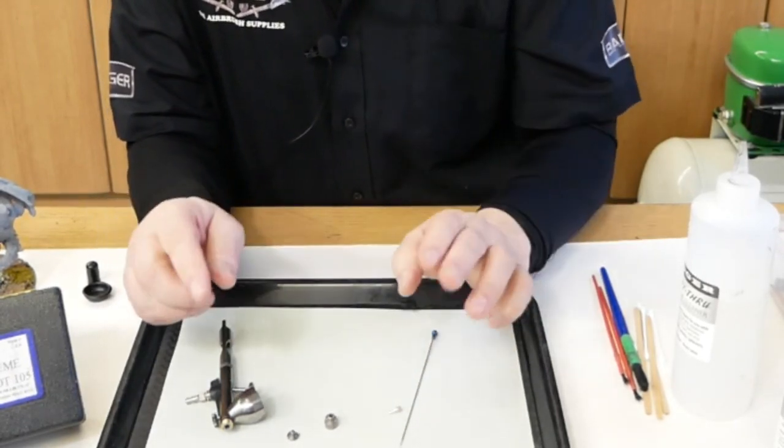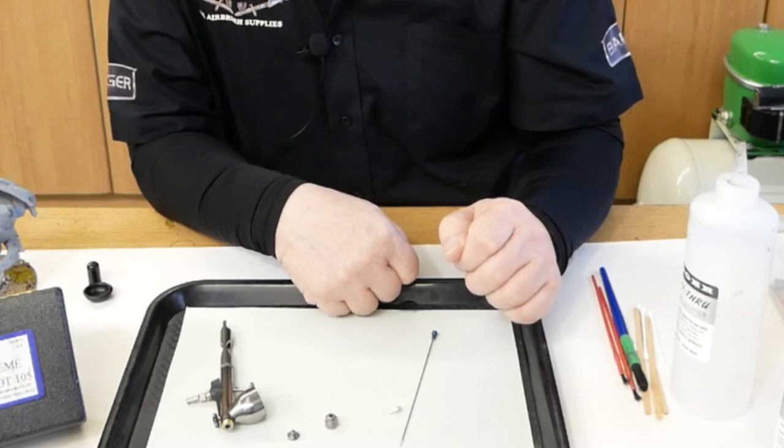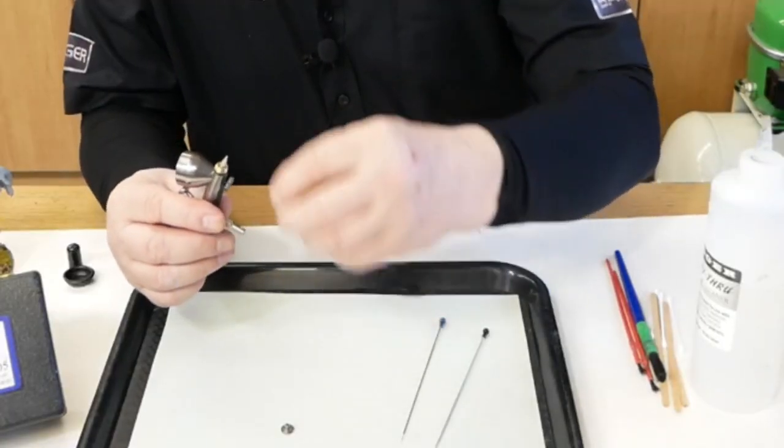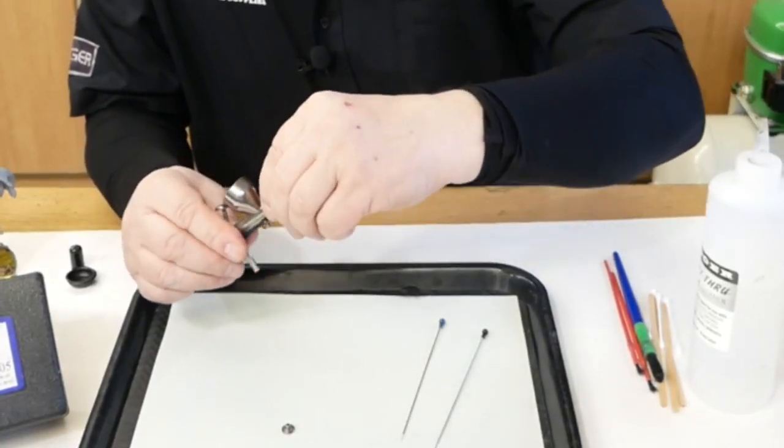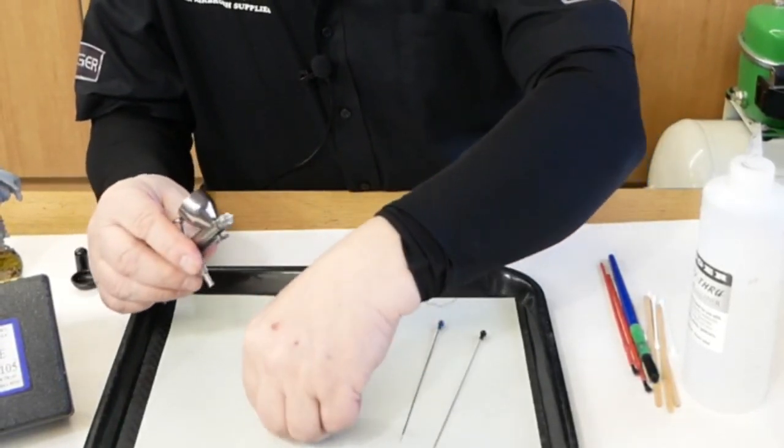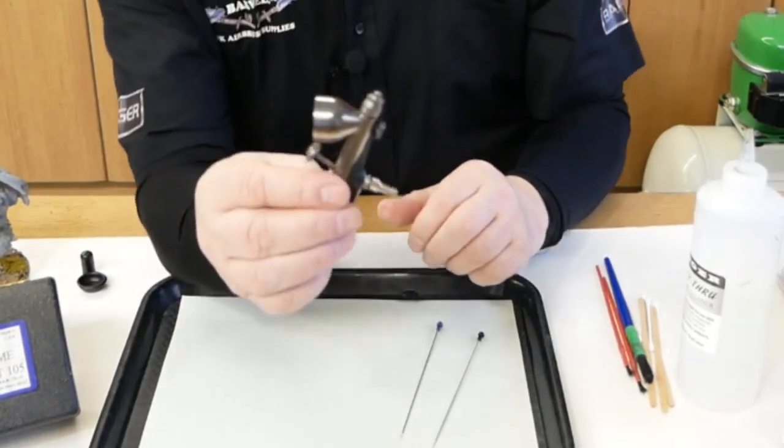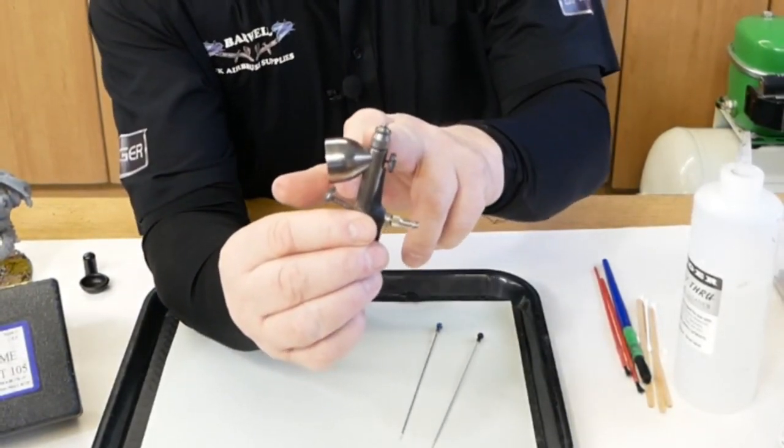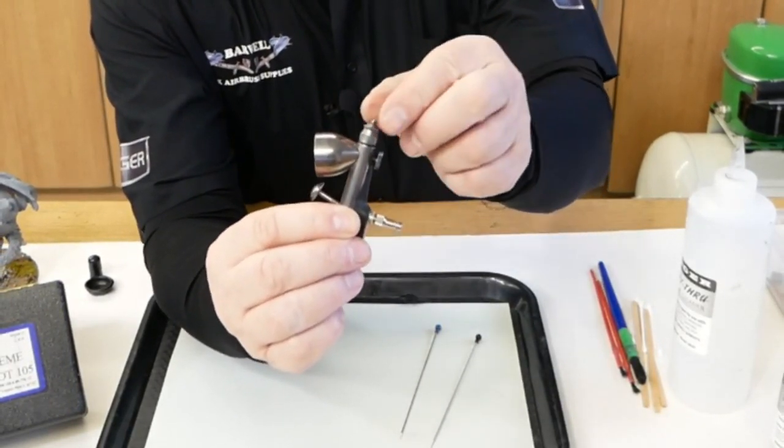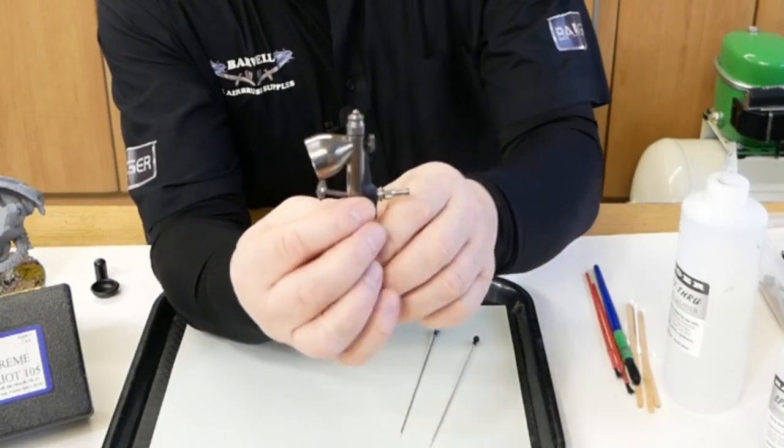So I will grab a 0.3 needle and try that in it just to see if that is the problem. And for those that are wondering, the spray regulator is for the old style. The new style has threads on the end there to hold a little protective cap on it. So this is the older type.